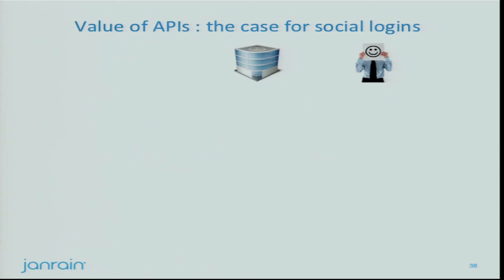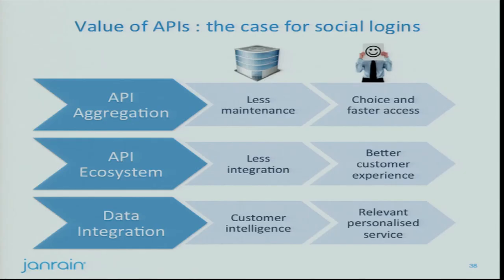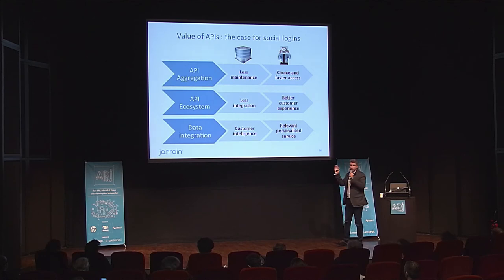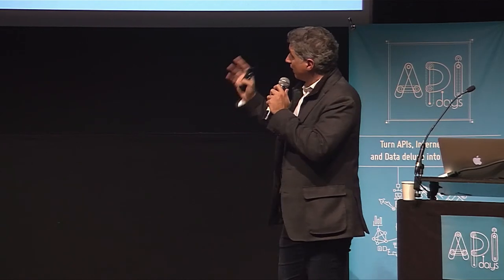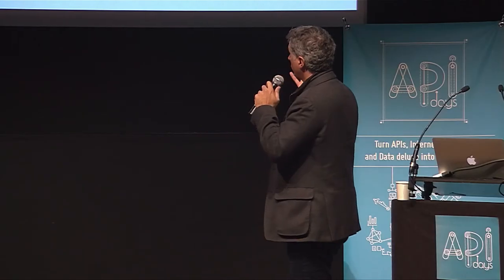Let me summarize the value derived from social login APIs from two standpoints: the brand and the end user. API aggregation benefits websites by providing less maintenance — they outsource the problem to specialists. From a customer standpoint, it provides more choice, more login options, and faster access to services. The API ecosystem, such as backplane, means less integration for the website and better customer experience. From a data integration standpoint, the benefit for the brand is better customer knowledge, while the trade-off for users sharing information is a more relevant and personalized service.